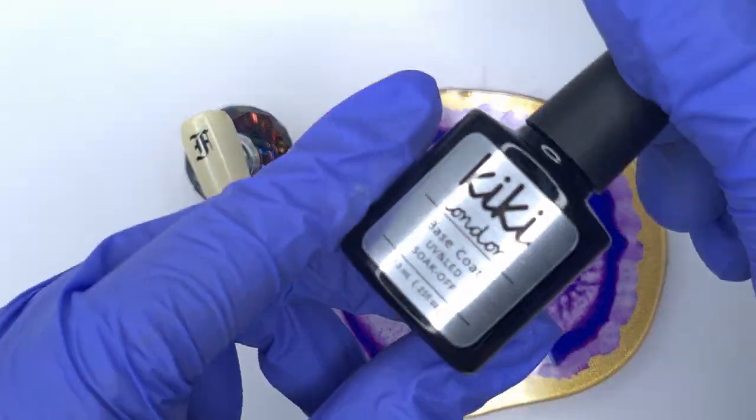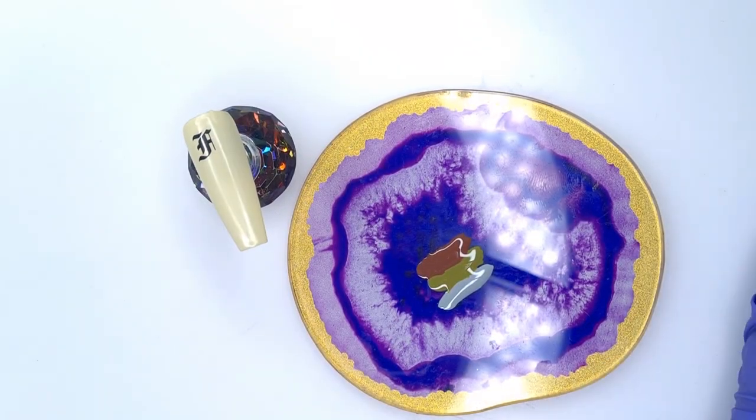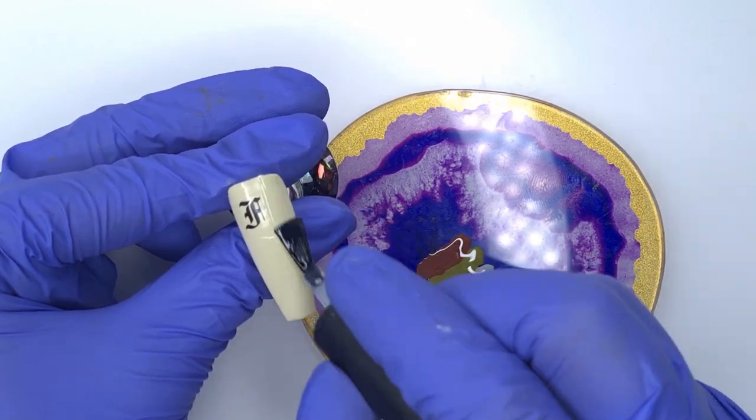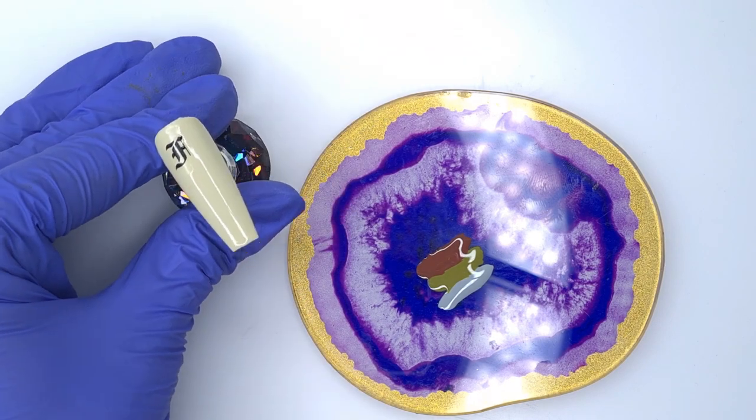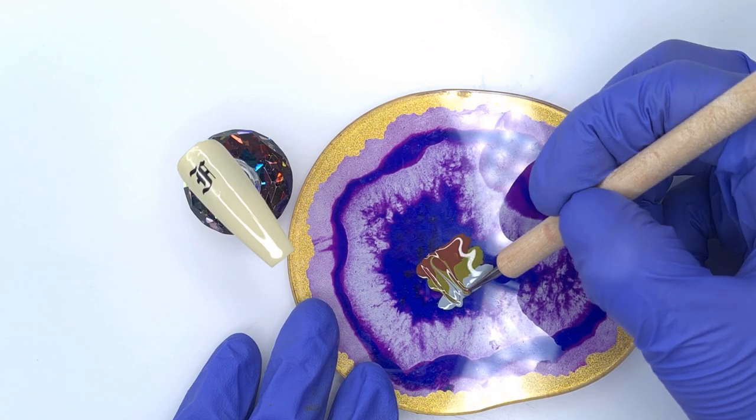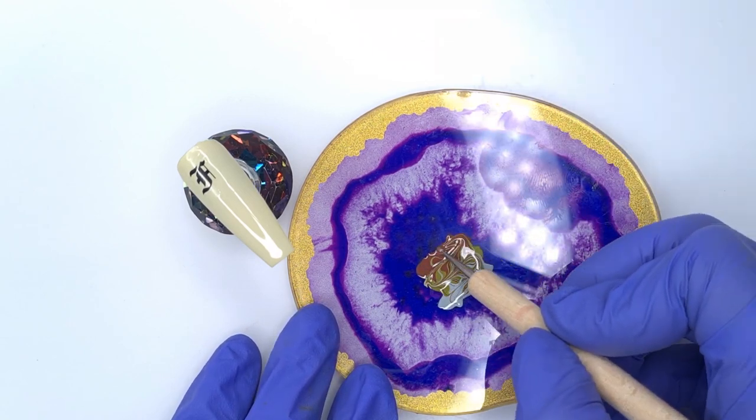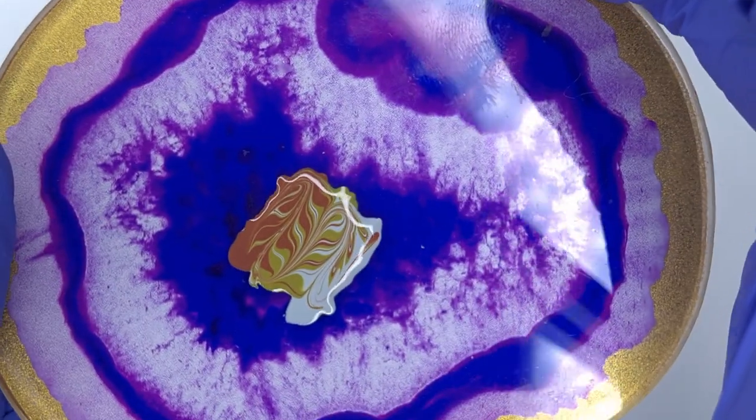So I've popped my gel polish colors down on my palette as you can see and before I marble them I'm just going to apply my base coat to the nail. Now I'm using the Kiki London base coat as a blooming gel here so I'm going to apply a thin layer of this to the nail and leave it wet and that's what I'm going to swirl my marble into. If you have a blooming gel you can use that but I've always found that base coat works perfectly so I've never found the need to purchase a blooming gel yet.